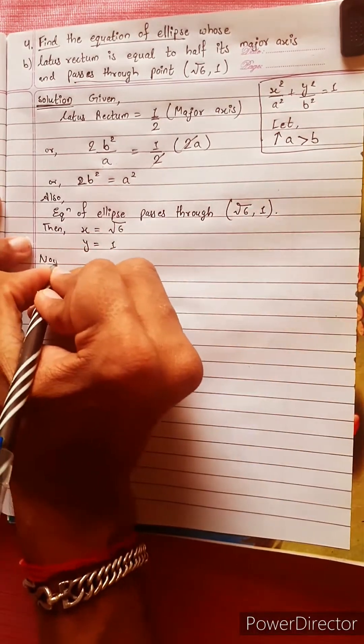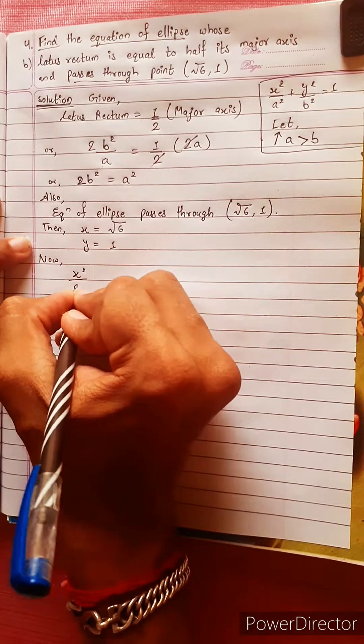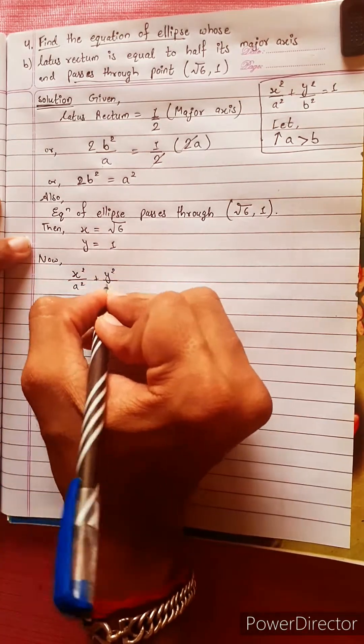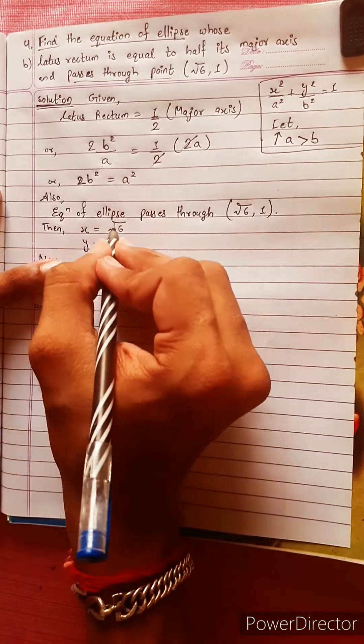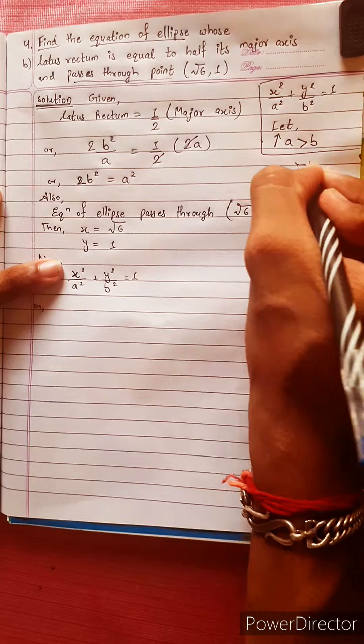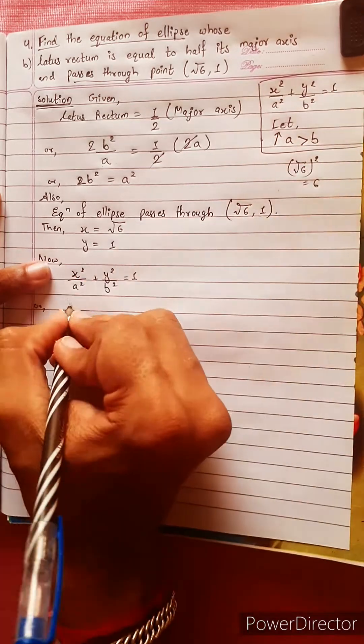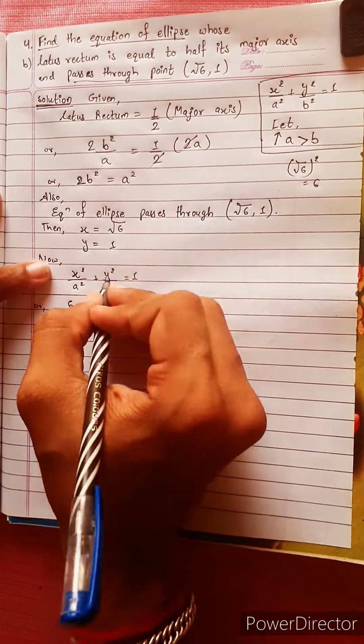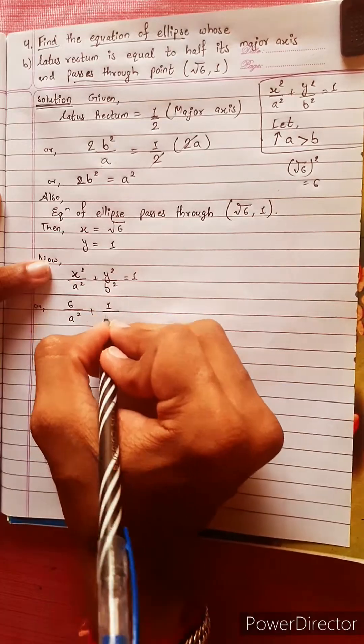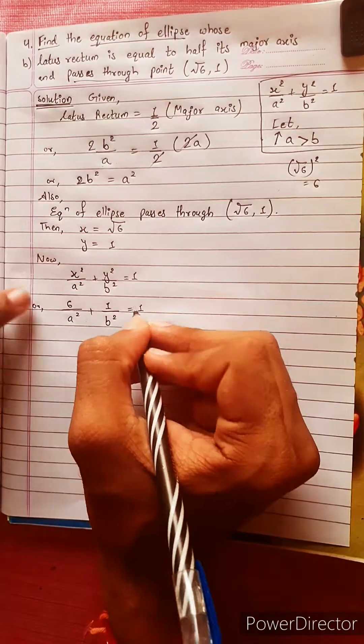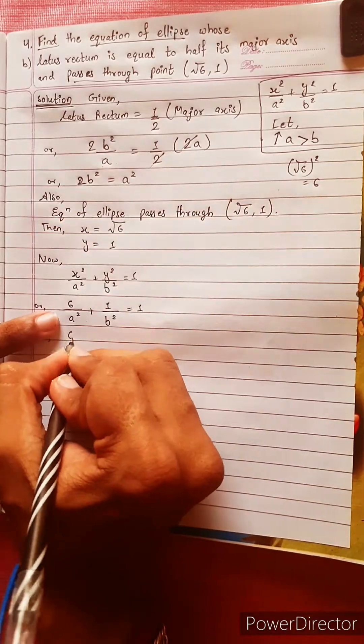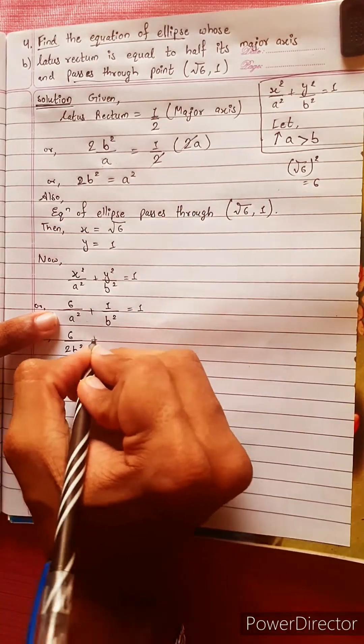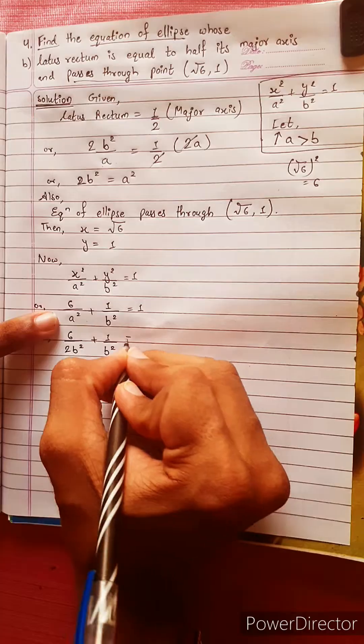Now, let's take a look at the equation x² by a² plus y² by b² equals to 1. Substituting x = √6 and y = 1: 6 divided by a² plus 1 divided by b² equals to 1. Or 6 by 2b² plus 1 by b² equals to 1.